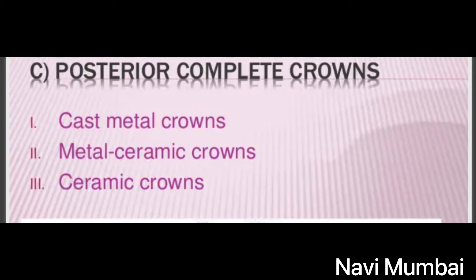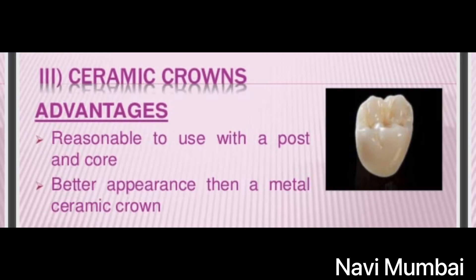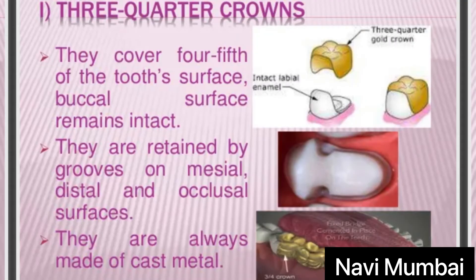For the posterior — that is the back teeth of our mouth — posterior complete crowns: number one is cast metal crowns, number two is metal-ceramic crowns, and number three is ceramic crowns. Ceramic crown advantages include being reasonable to use with a post and core and providing better appearance than a metal-ceramic crown.